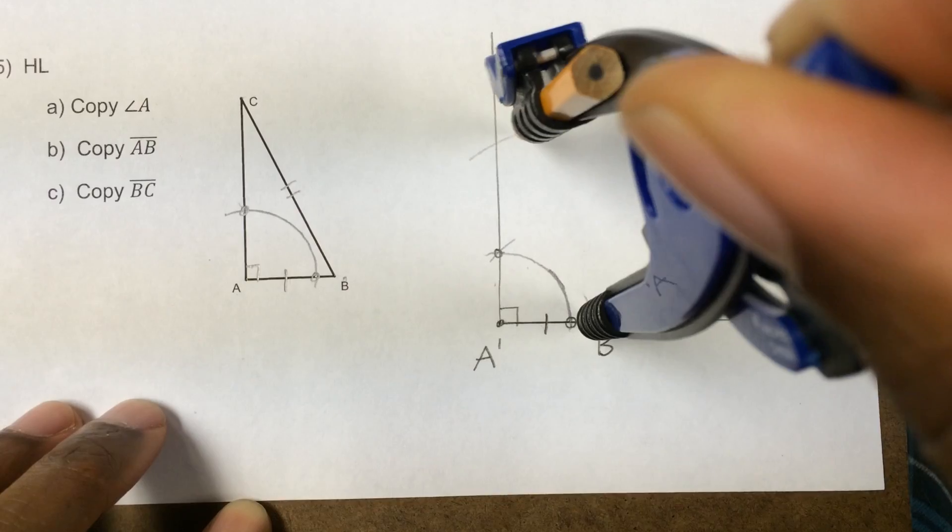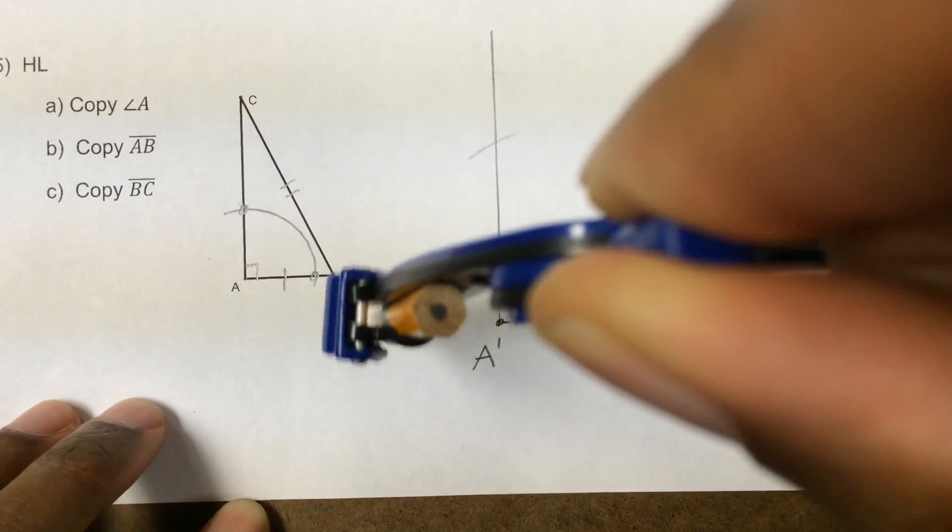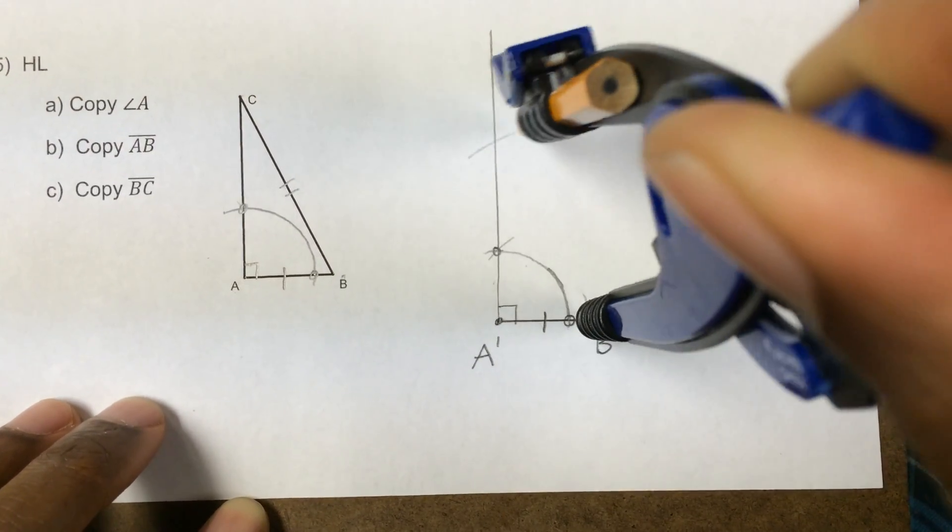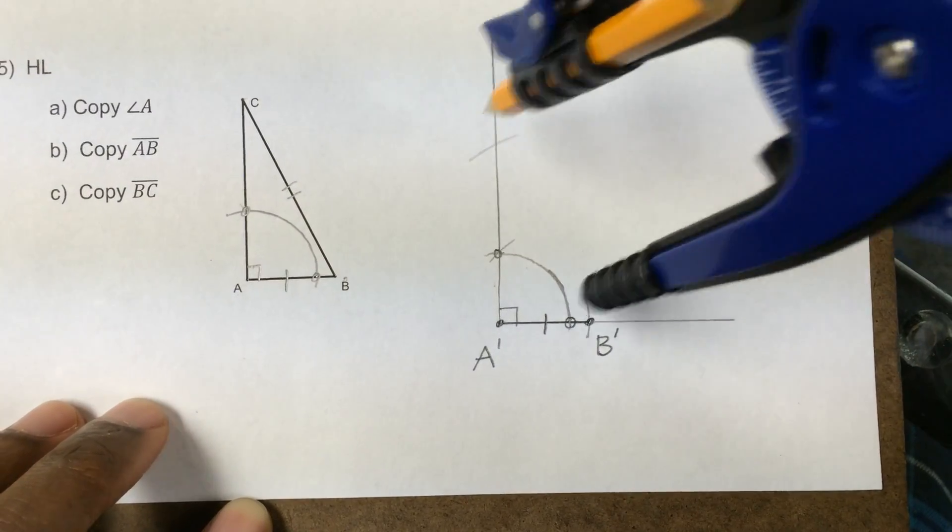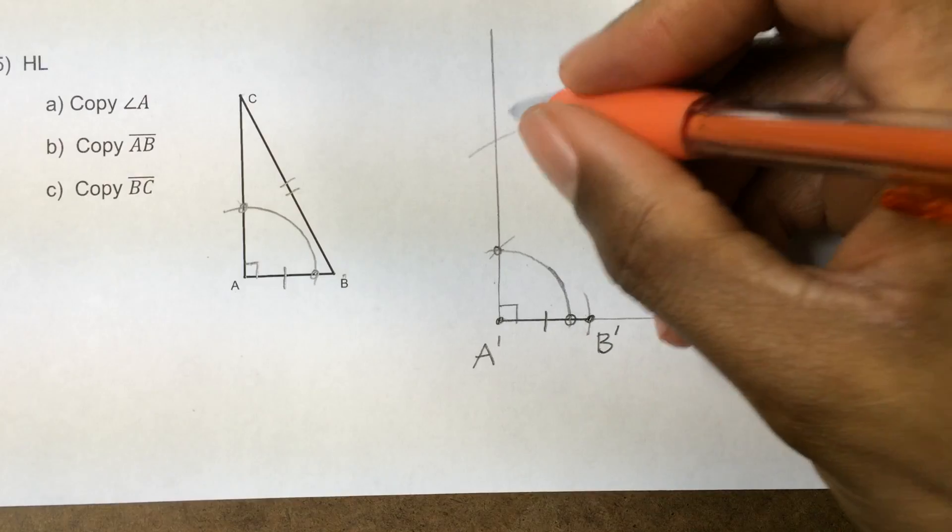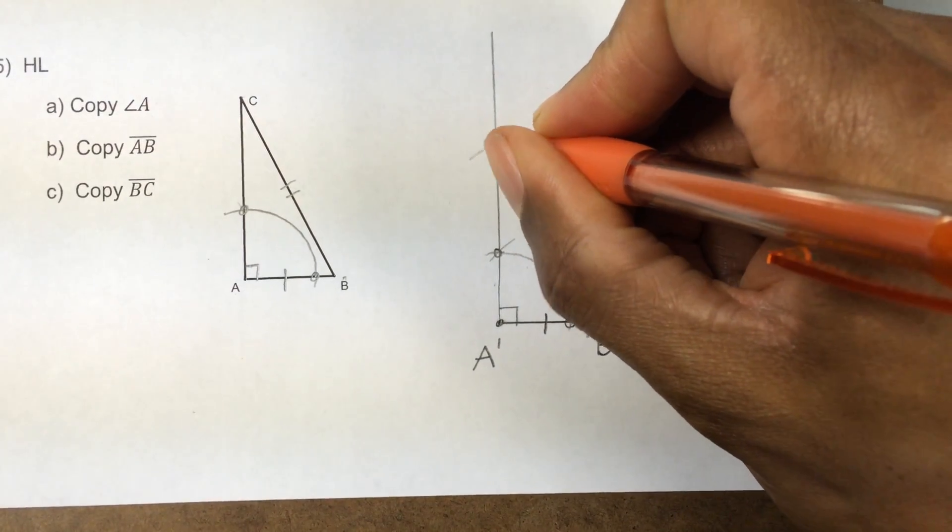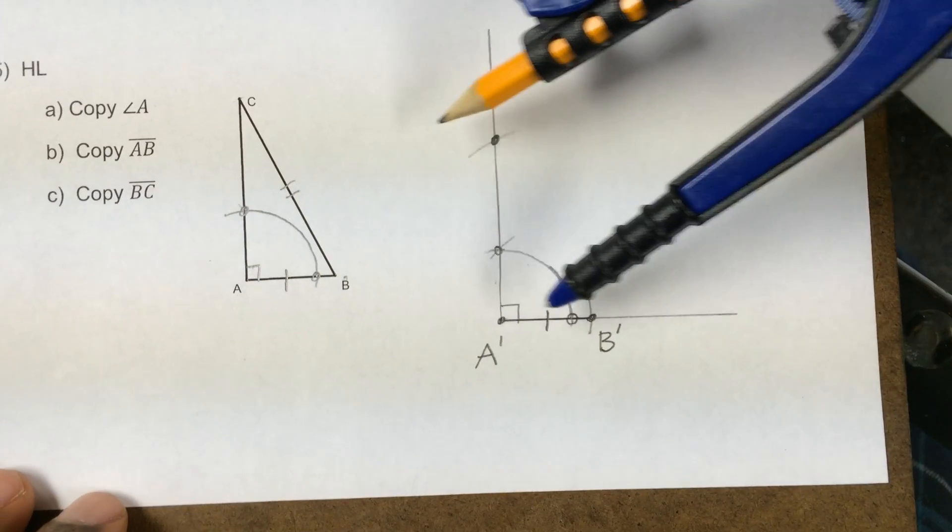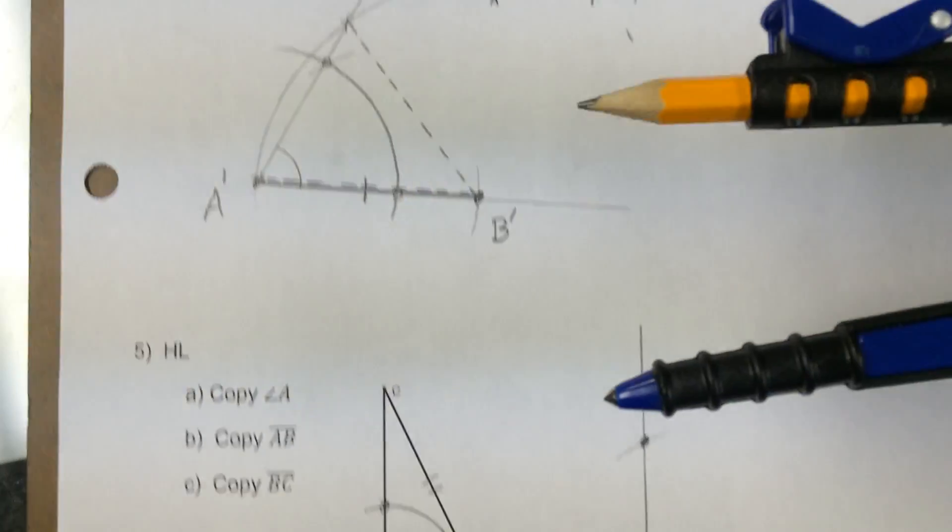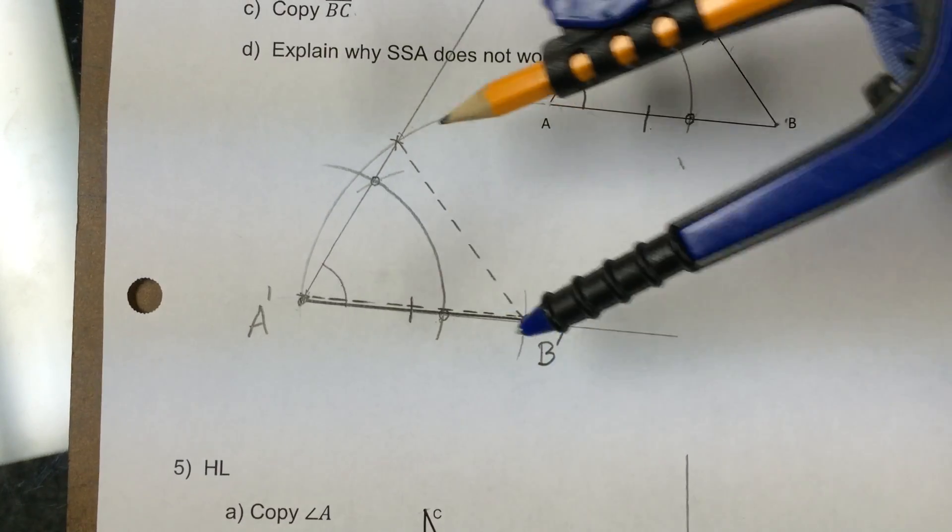Now, if I tried to move my compass all the way around, it's never going to intersect this side anywhere else. It's only going to hit one place. So I can be very confident that this is, in fact, point C. It has the right length because I measured it out. But there's no ambiguity.